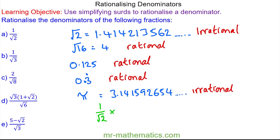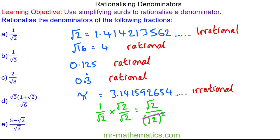We can do this by multiplying the numerator and denominator by root 2, because in effect we are actually multiplying by 1. When we work out the numerator we have 1 multiplied by root 2, which is root 2. And for our denominator we have root 2 multiplied by itself, which is root 2 squared. We know that the square and the square root will cancel, so now we have root 2 over 2. Our denominator is now rational.